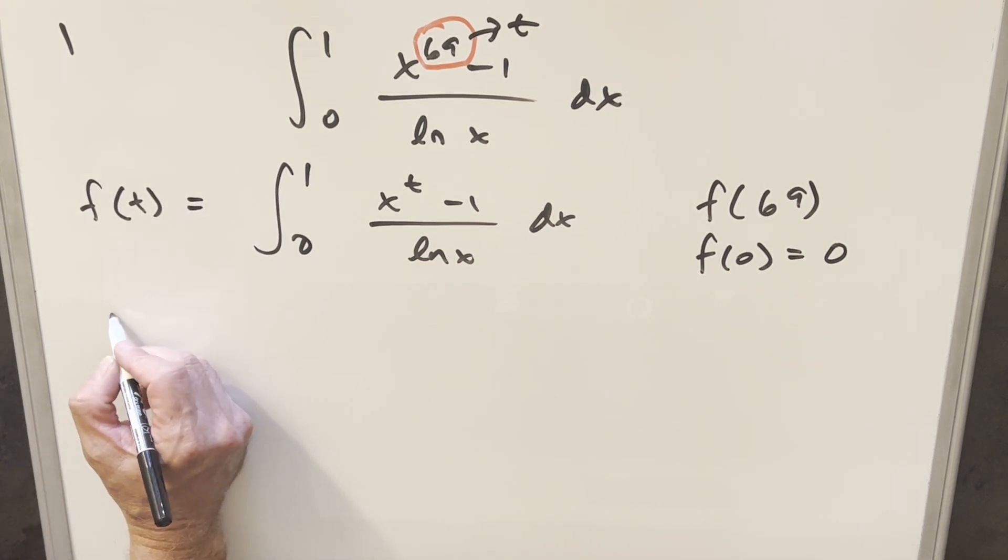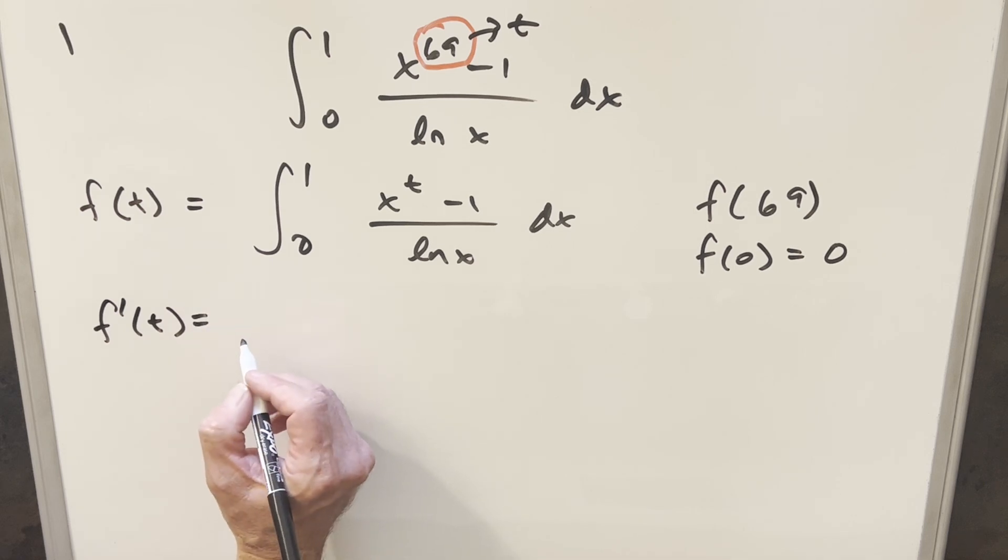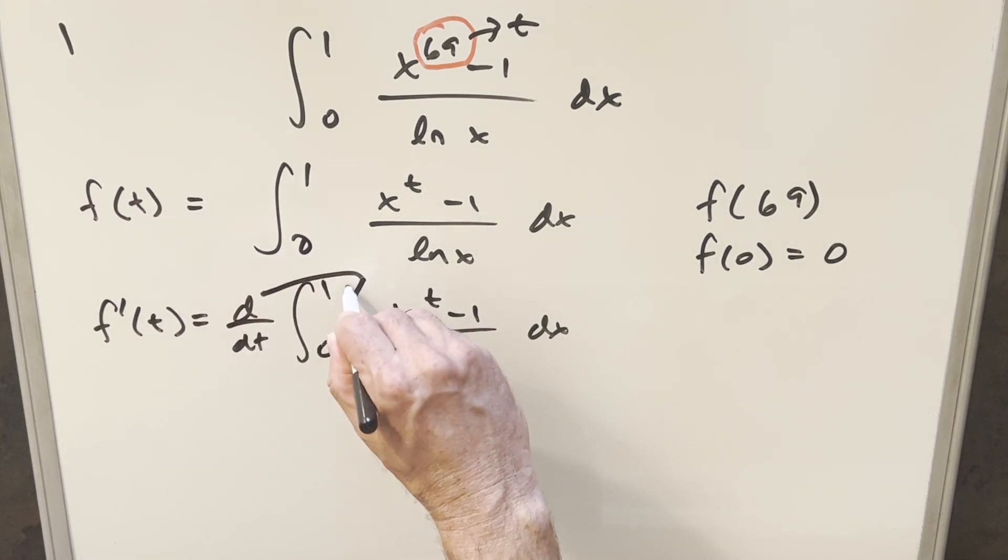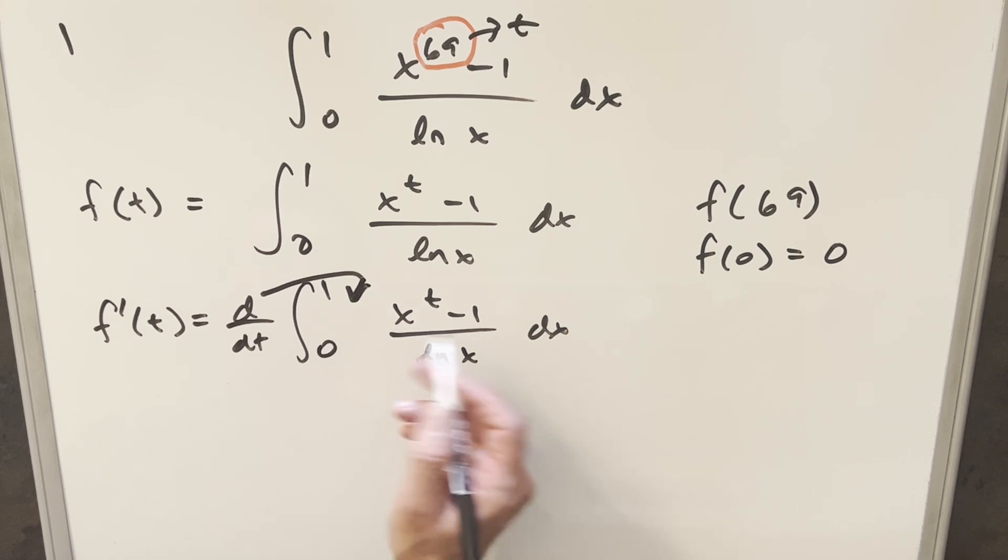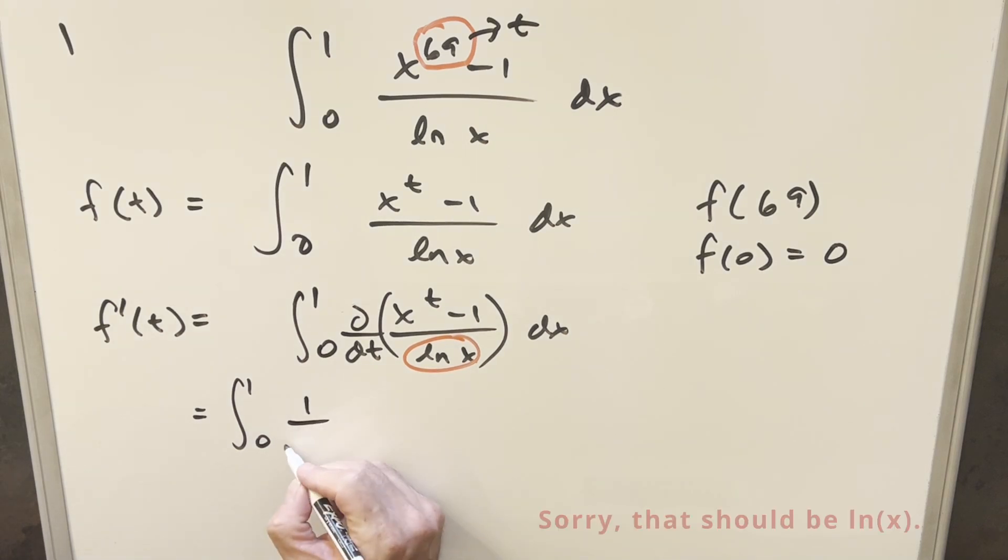And next, going ahead with Feynman's technique, we just need to differentiate this whole thing with respect to t. So what we want to do for this, we actually want to differentiate inside the integral here. And we'll do this with a partial because we've got two variables now, t and x. So we'll differentiate this with respect to t. So now going ahead with this derivative, what I want to notice first is ln x, this piece right here, this is just going to be a constant with respect to t. So we can bring this in front and it's not going to be affected by the derivative.